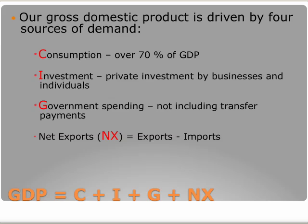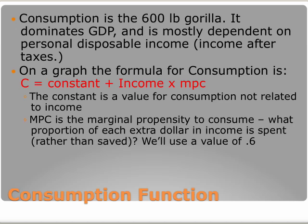Let's start with the underlying framework — the foundation for gross domestic product. In the spending definition of GDP there are four major components: consumption, investment, government spending, and net exports. Consumption is the 600-pound gorilla here — it's over 70 percent of GDP — so it dominates. The principal driver of consumption that we need to think about is income.